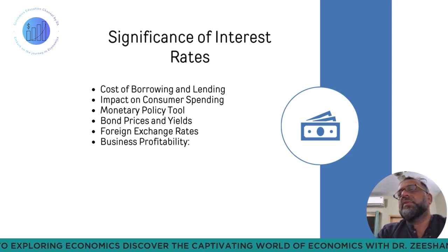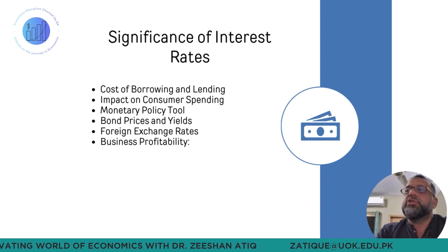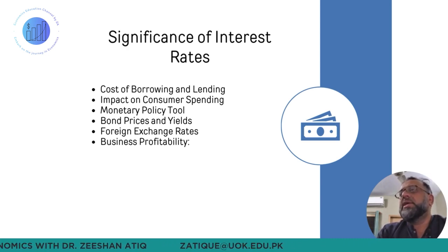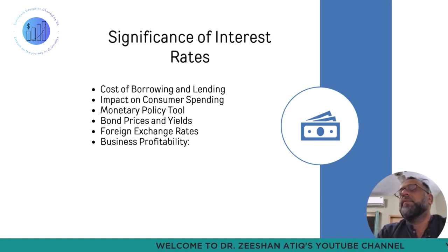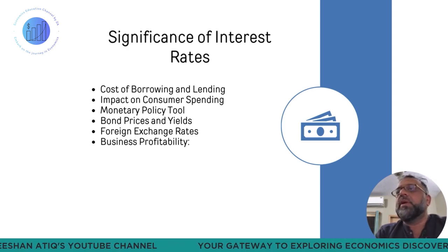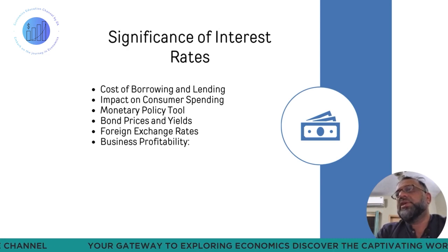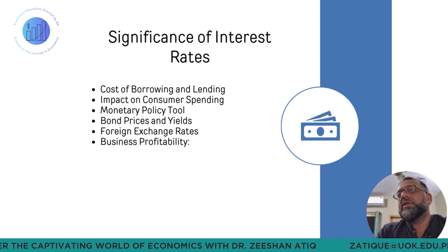Governments use interest rates as a monetary policy tool — whenever they want to control the demand side of the economy, they change interest rates, making it a very handy tool to control fluctuations in the economy. Bond prices also have a very strong linkage with interest rates; bond prices vary inversely with interest rates, and yields on bonds depend on the prevailing interest rate. Foreign exchange rates also depend on money flows into a country to earn interest, which can increase demand for local currency and affect exchange rates. Business profitability similarly depends on how much interest a firm has to pay.